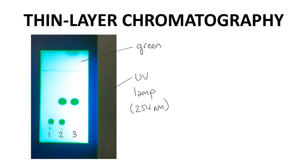Why do the compounds on the plate look like dark spots? If there is a compound on the plate that can absorb UV light, then at that position the compound is absorbing the UV light instead of the dye on the plate. Therefore, the plate in that location does not glow green and it appears dark. It is a wonderfully simple application of UV spectroscopy, and many users do not realize they are using the ideas of spectroscopy.